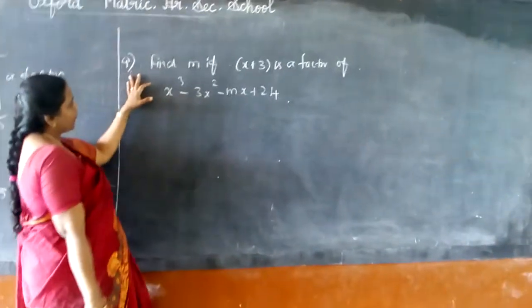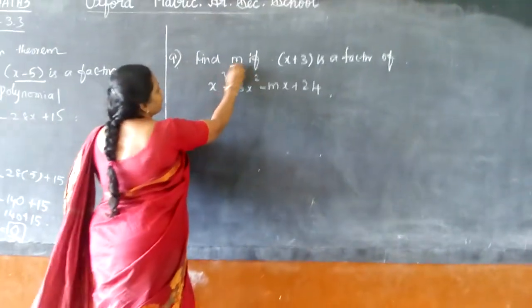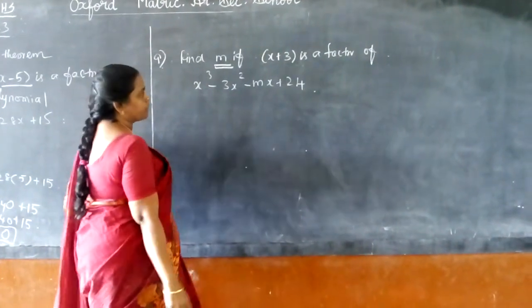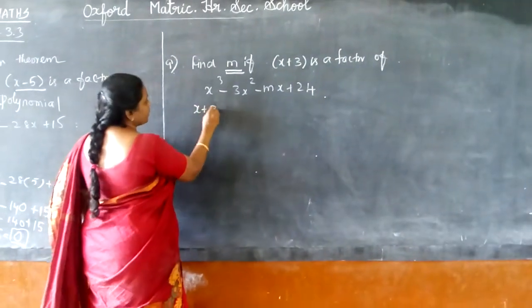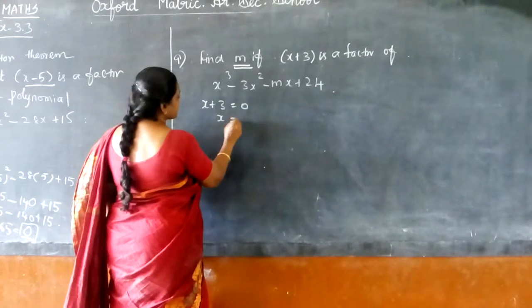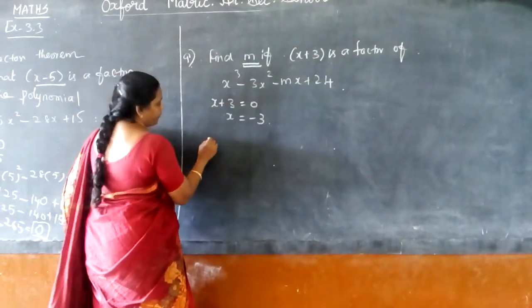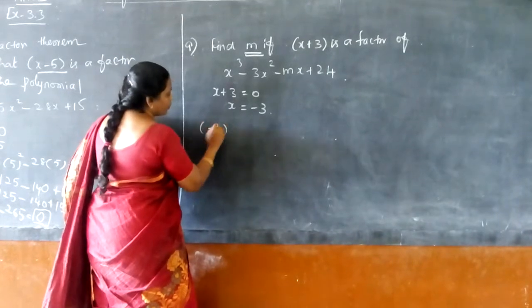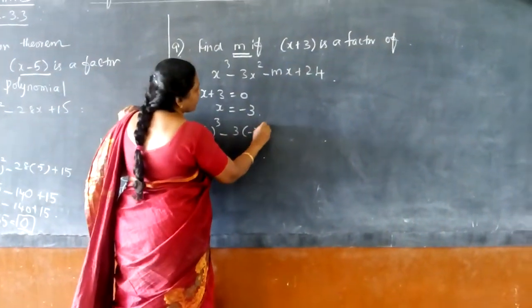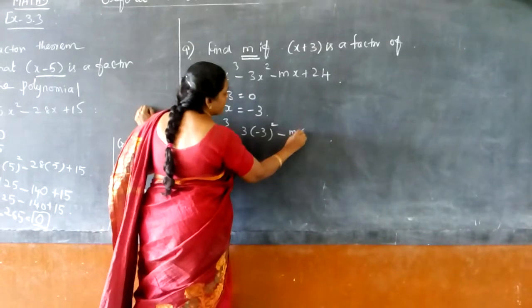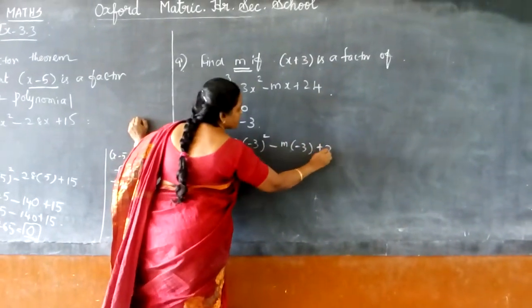Now the ninth equation is find m. That means I am going to find the value of m if x plus 3 is a factor of this. If x plus 3 is equal to 0, therefore x is equal to minus 3. Now let me substitute this and find the value of m. So minus 3 cube minus 3 into minus 3 square minus m into minus 3 plus 24.